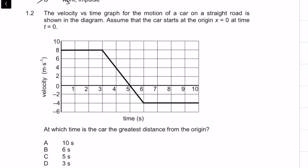The velocity versus time graph for the motion of a car on a straight road is shown. Assume that the car starts at t = 0. At which time is the car the greatest distance from the origin? When we're speaking about distance, we're speaking about displacement as well.